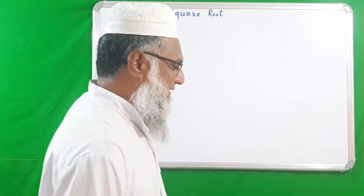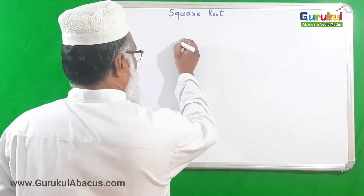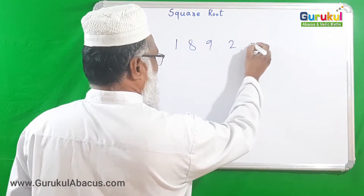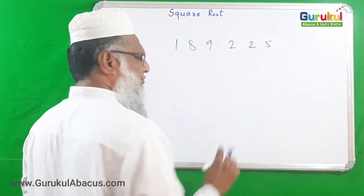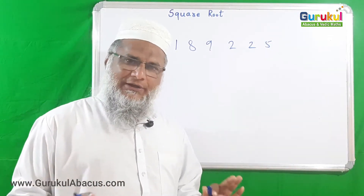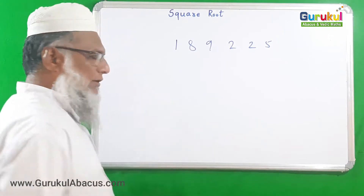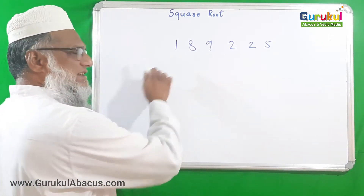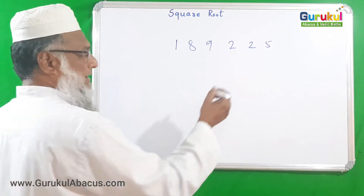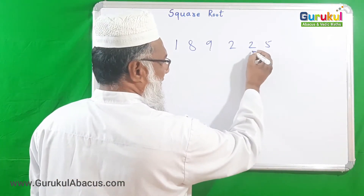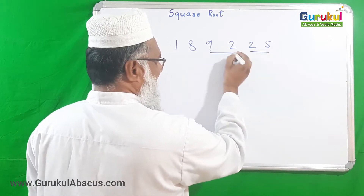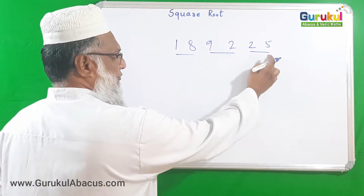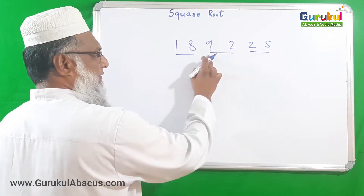We will take one simple example: 189225. This is a complete square number. Before solving, see how many digits are there — six digits total. While solving, from the right side we have to make pairs of two digits: unit, ten, hundred, thousand, ten thousand — we make pairs of two digits.